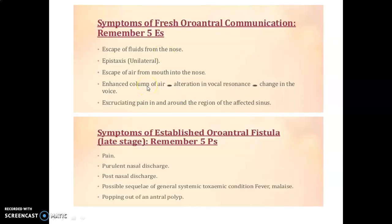Symptoms of fresh oroantral communication: escape of fluid from the nose, epistaxis, unilateral escape of air from the mouth into the nose, altered column of air leading to alteration in vocal resonance and change in voice, and excruciating pain in and around the region of the affected sinus. Late-stage symptoms include pain, purulent nasal discharge, post-nasal discharge, possible systemic toxemic conditions like fever and malaise, and prolapse of an antral polyp.